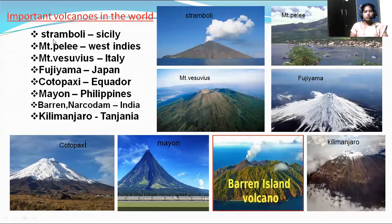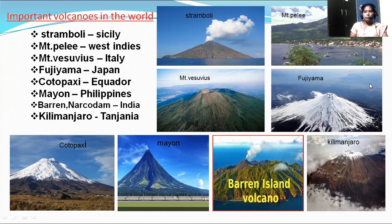There are some important volcanoes in the world: Stromboli volcano located in Sicily, Mont Pelée volcano located in the West Indies, Mont Vesuvius located in Italy, Mont Fuji volcano located in Japan, Cotopaxi volcano located in Ecuador, Mayon located in the Philippines, Barren and Narcondam volcanoes in India, and Kilimanjaro volcano in Tanzania. These are the real images of the important volcanoes in the world.